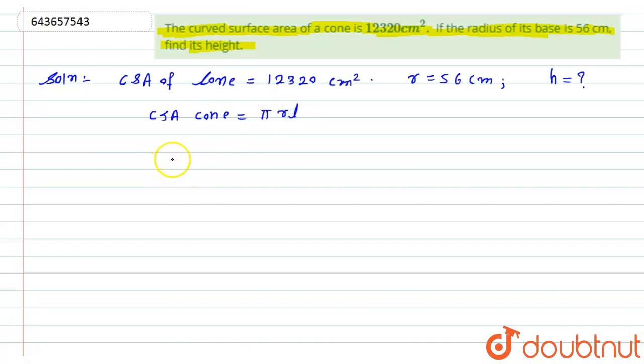That is 12,320 will be equal to 22 divided by 7 into r is 56 multiplied by l. So from here what I will get: 7 goes into 56, 8 times. 8 goes into the 16, remaining 1. 8 into 16 and 1, that will be 17.